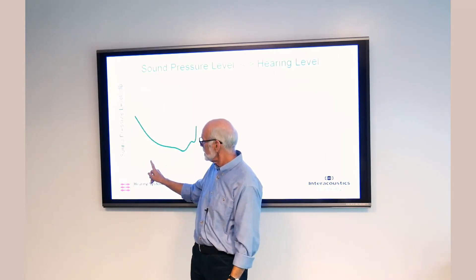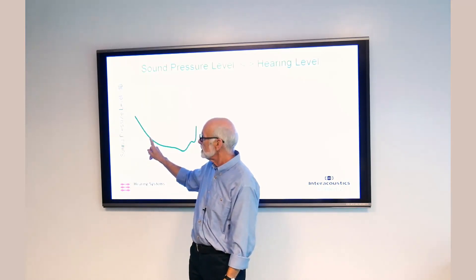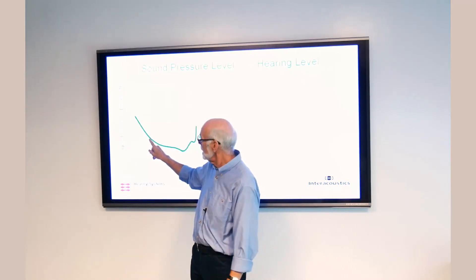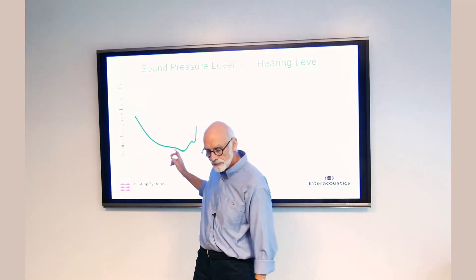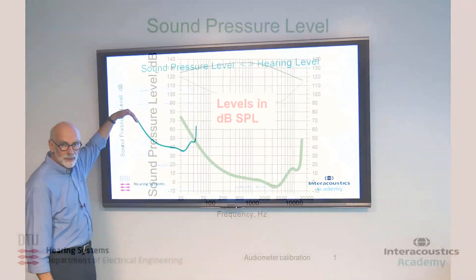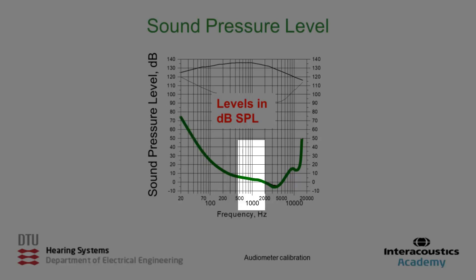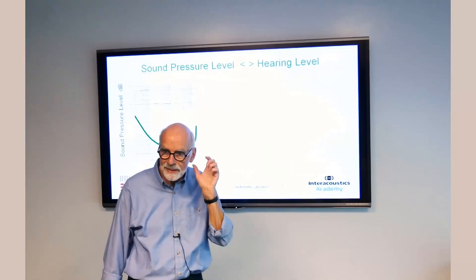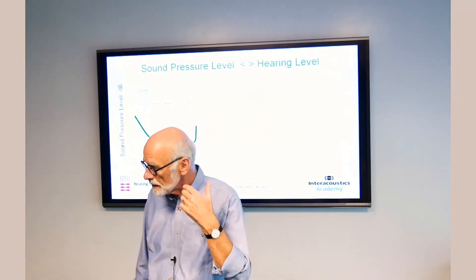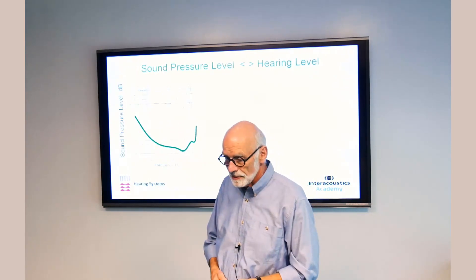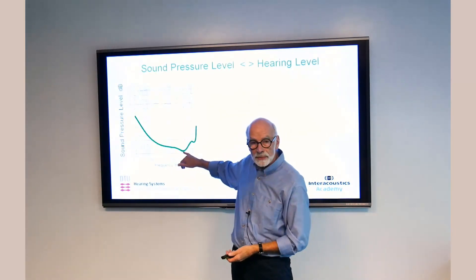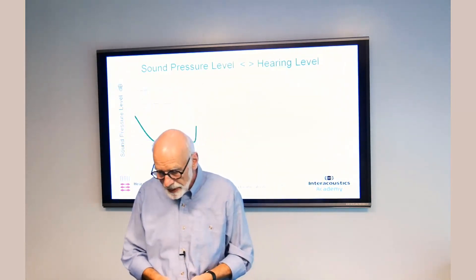The measurement is done by turning up, for example, a 100 Hz tone until the test subject says they can hear it, then marking that point and repeating for all frequencies. At around 1000 Hz the threshold is close to 0 dB, and at 3000–4000 Hz it is actually below 0, around minus 4 to 5 dB. That is due to the resonance of the ear canal, which also corresponds to the frequency range most important for speech signals.